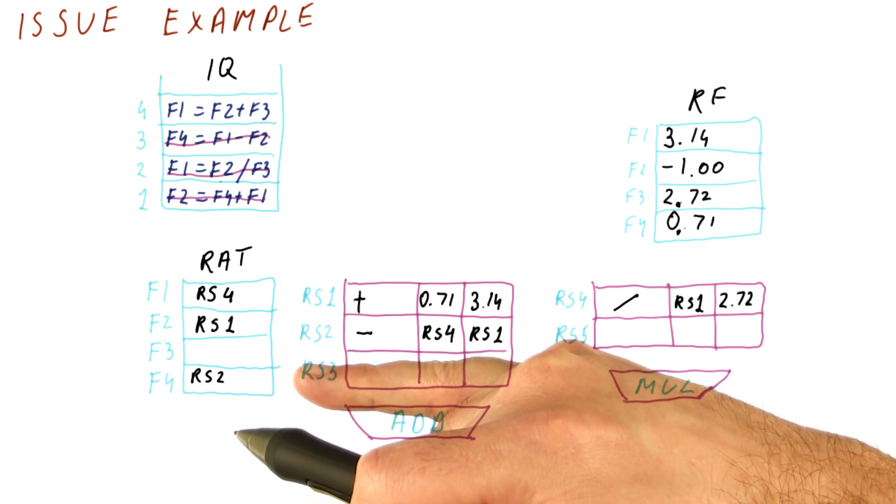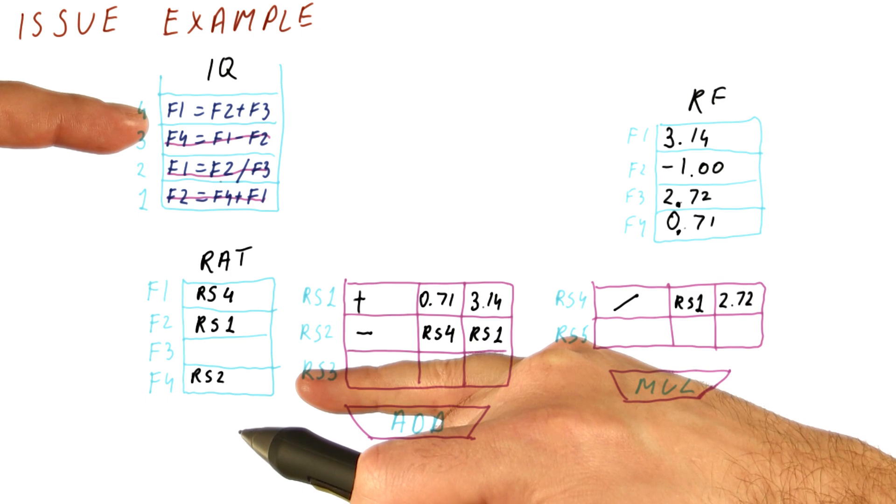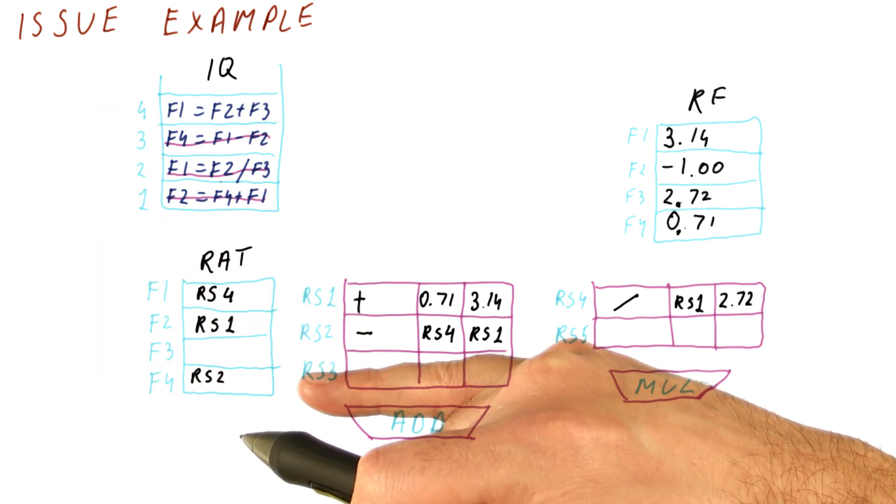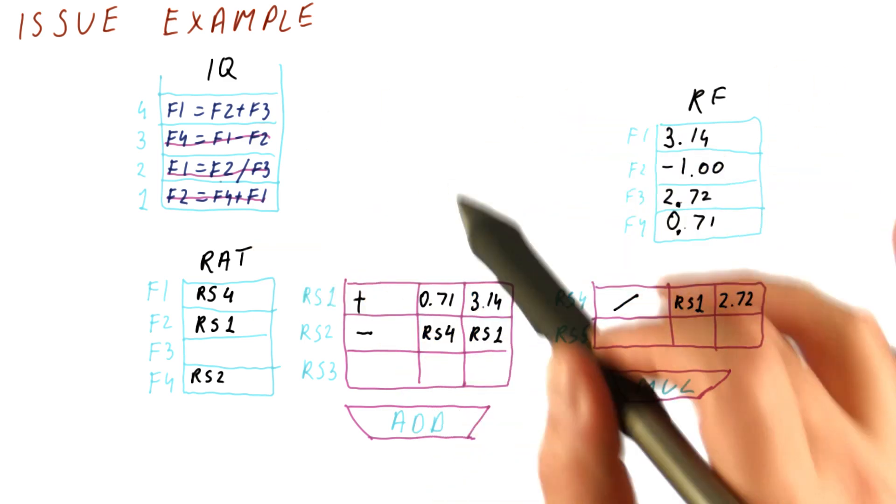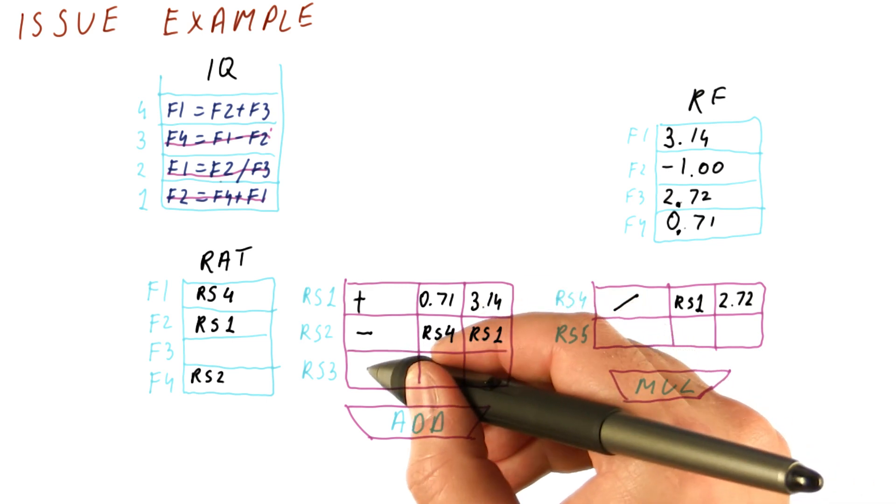We then couldn't issue the next instruction in the next cycle until we are actually done executing one of these two. I'm not going to do that, but just keep in mind that when you want to issue an instruction, you first have to check whether a reservation station is available. If not, then we simply cannot issue that instruction.